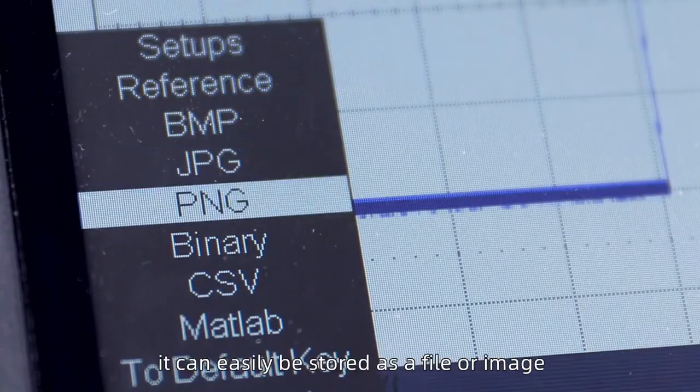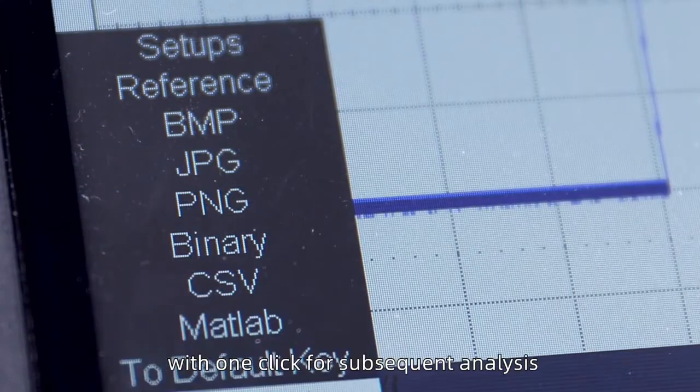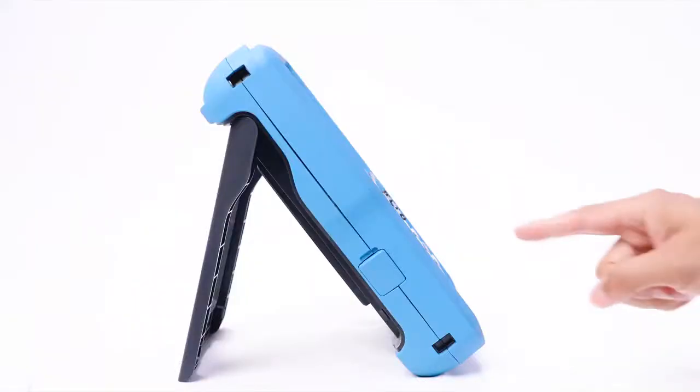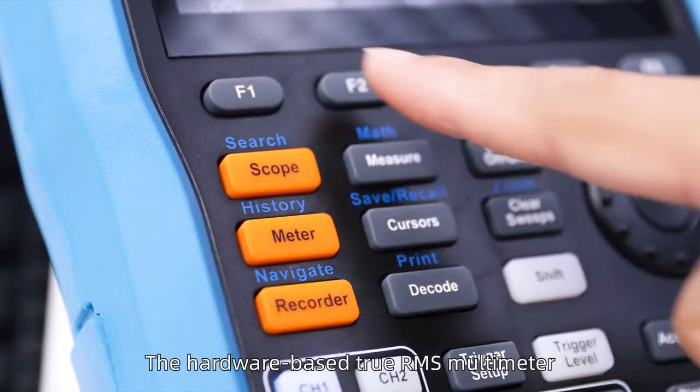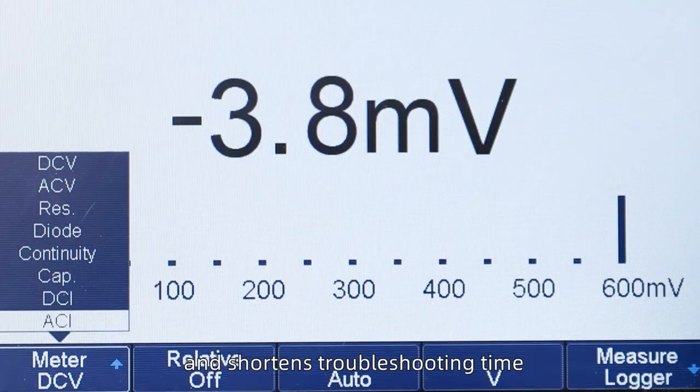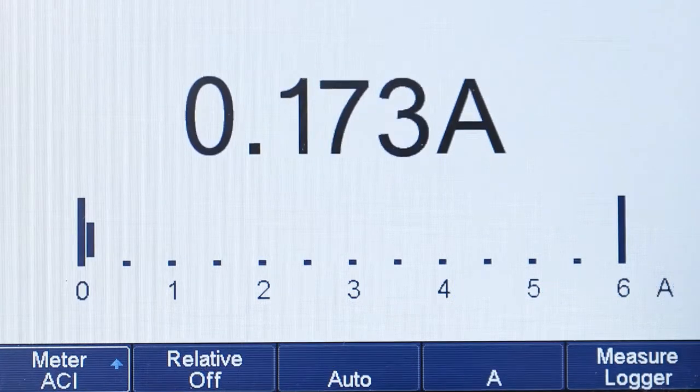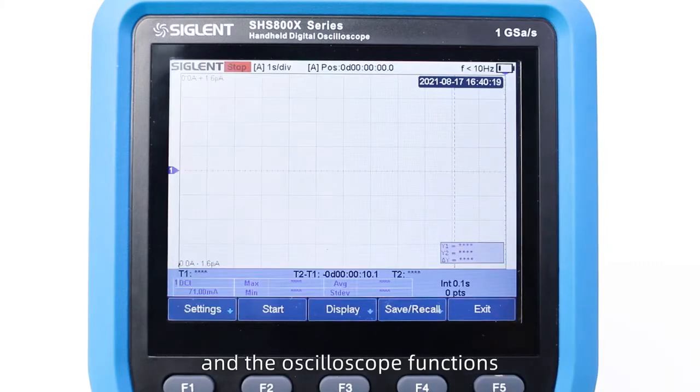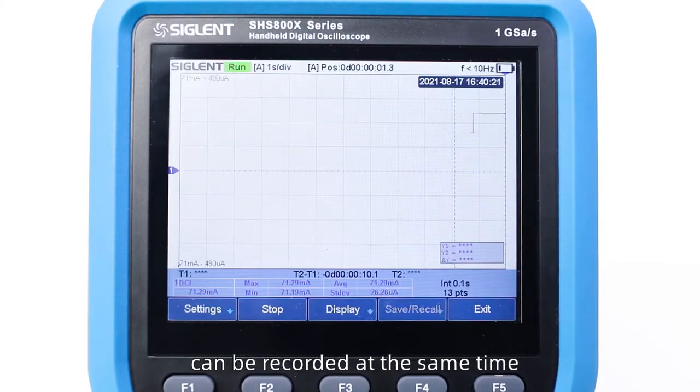After the waveform is acquired, it can be easily stored as a file or image with one click for subsequent analysis. The hardware-based TrueRMS multimeter reduces measurement errors and shortens troubleshooting time. The measured values of the multimeter and oscilloscope functions can be recorded at the same time.